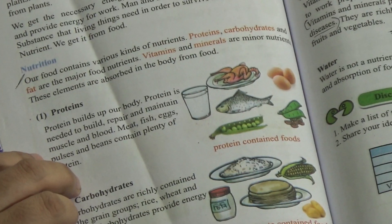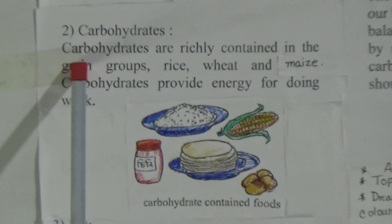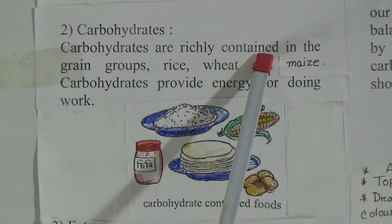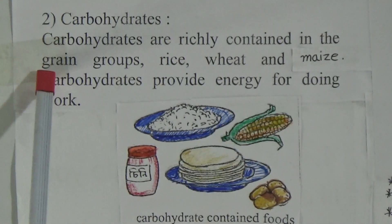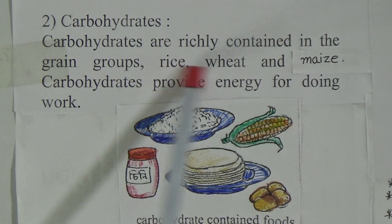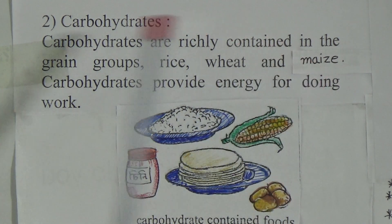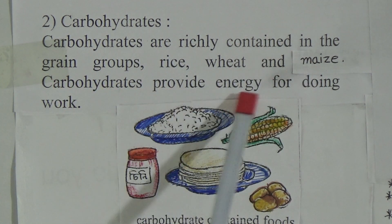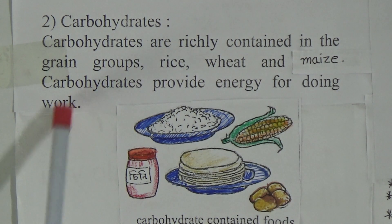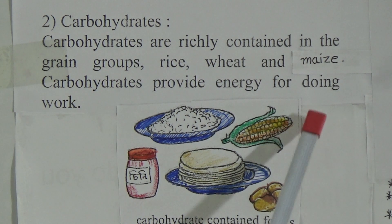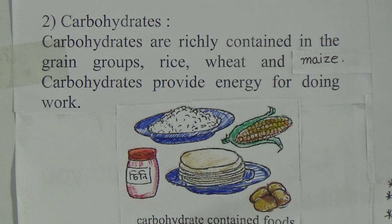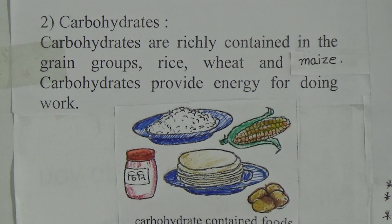The next one is carbohydrates. Carbohydrates are richly contained in the grain groups — rice, wheat, and maize. Carbohydrates provide energy for doing work. Here are some foods — these are carbohydrate-containing foods.